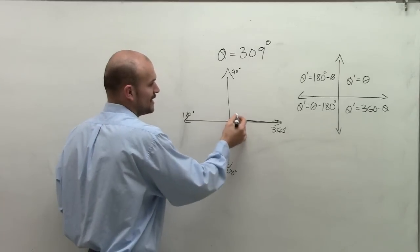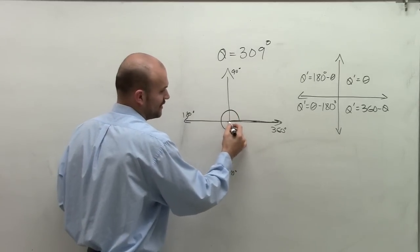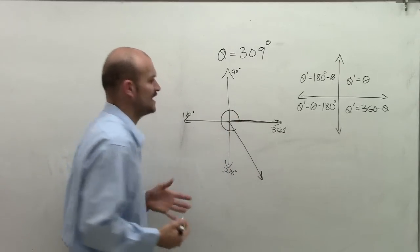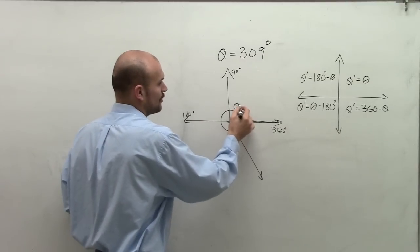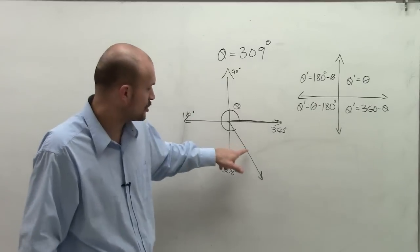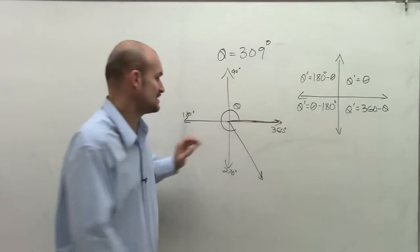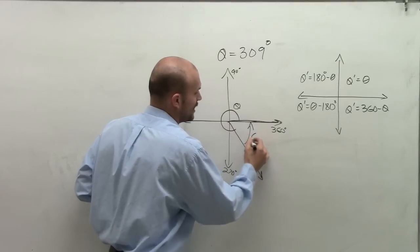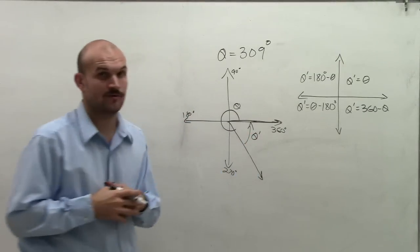So therefore, 309 degrees is going to be roughly some angle right around there. So therefore, that's going to be my angle theta. Now remember, the reference angle is your acute angle from the terminal side of your angle to the horizontal axis. Therefore, theta prime is going to be this angle right there.